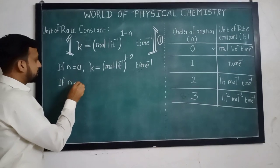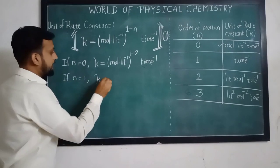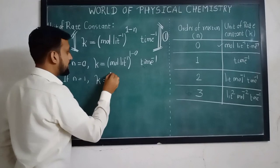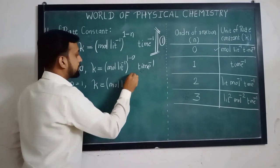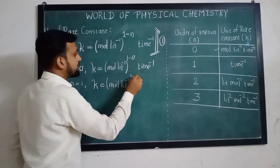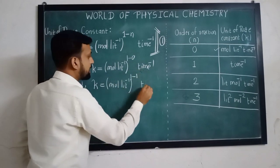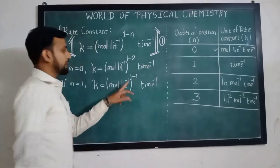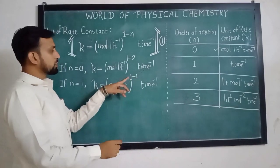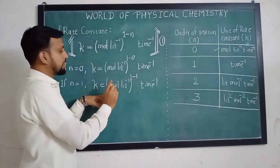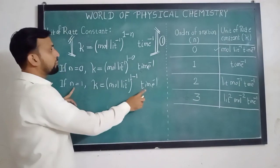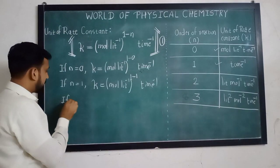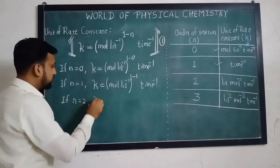If n is equal to 1, then from expression 1, K is equal to mol per liter raised to 1 minus 1, per time. 1 minus 1 is 0, and anything raised to 0 is 1. Therefore the unit of rate constant for a first order reaction is per time.